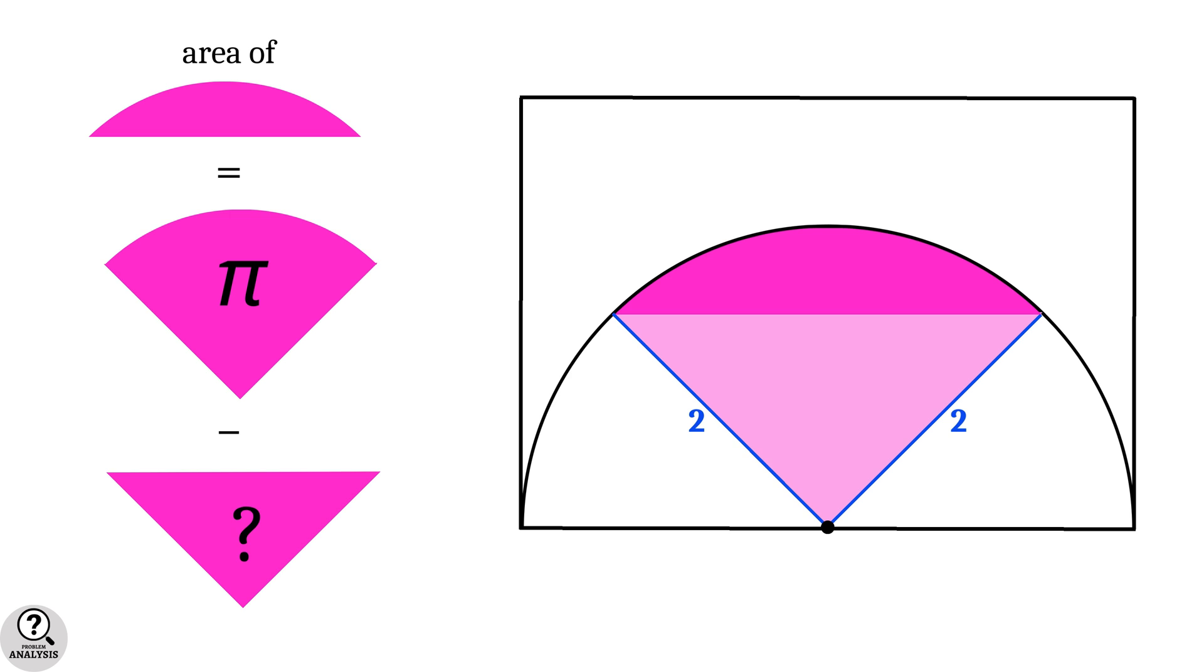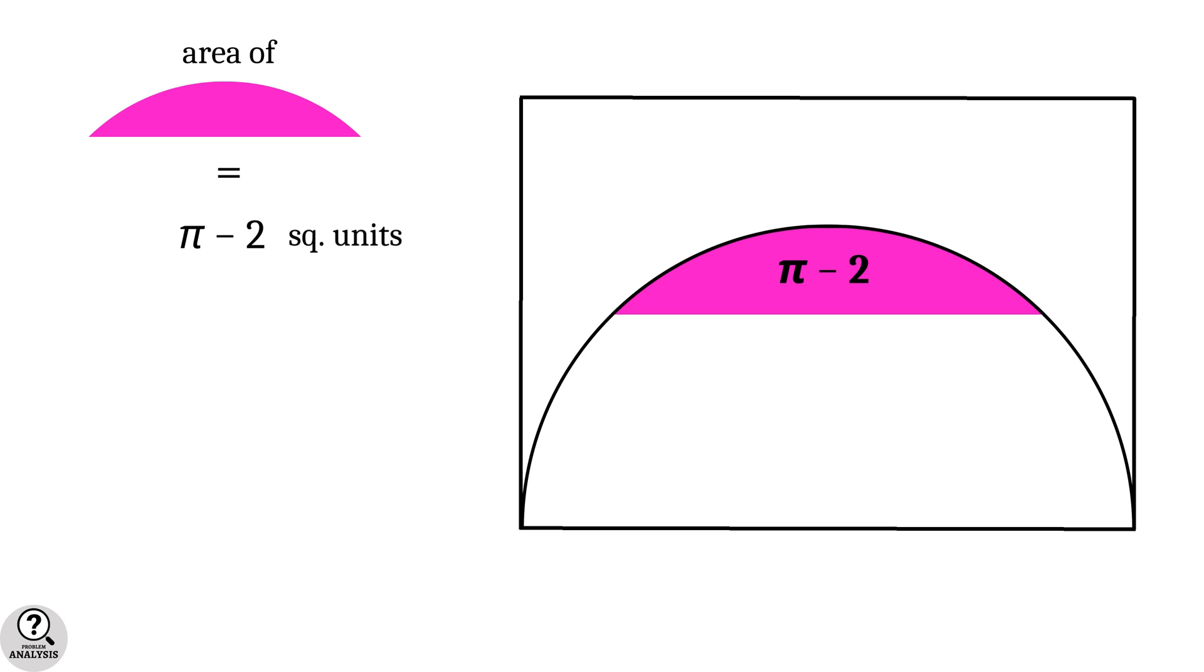Now what is the area of this triangle? For that, note that this triangle is a right triangle with perpendicular sides of 2 units each. Therefore its area will be (1/2) × 2 × 2 equals 2 square units. That means in our figure, the area of the horizontal half is π minus 2 square units.